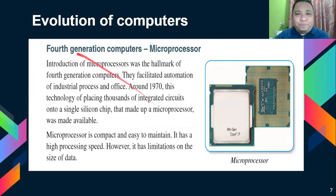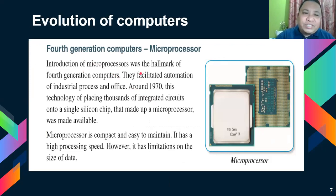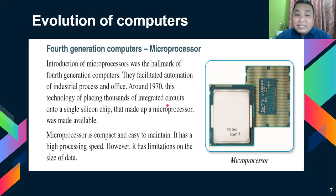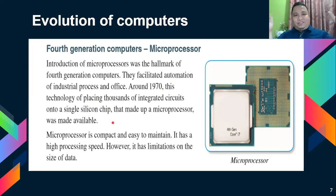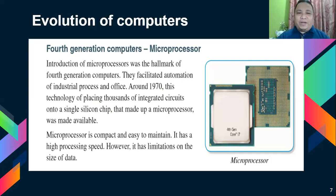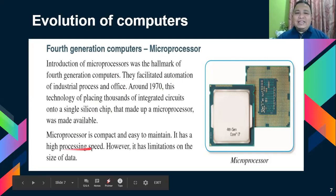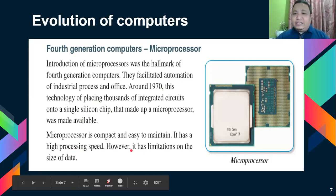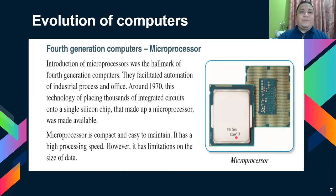Then we also have fourth generation computers. The introduction of microprocessors was the hallmark of fourth generation computers. They facilitated automation of industrial processes and offices. Around 1970, the technology of placing thousands of integrated circuits into a single chip — making a microprocessor — became available. The semiconductors were made smaller and smaller into microprocessors. They are compact, easy to maintain, and have high processing speed. However, there are limitations in the size of data. This is a fourth generation Core i7 microprocessor.